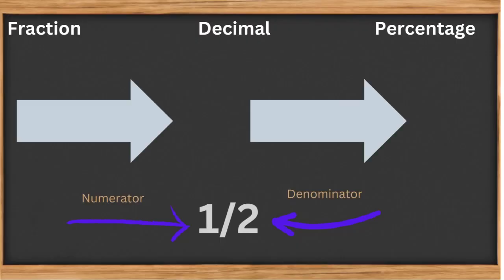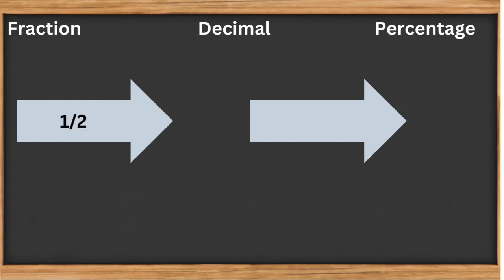To convert a fraction into a decimal, the first thing you need to do is divide the numerator by the denominator. The numerator is the one and the denominator is the two in the example on your screen.